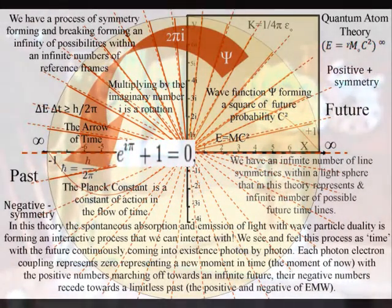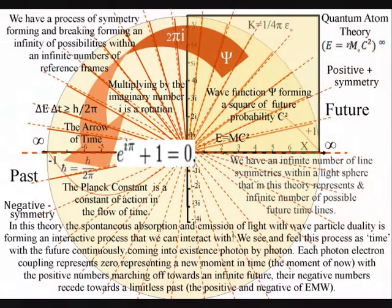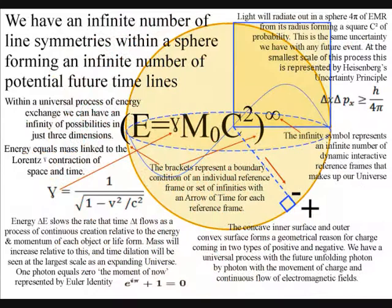We have an infinite number of line symmetries within a sphere, that in this theory represents an infinite number of timelines for potential future possibilities and opportunities.